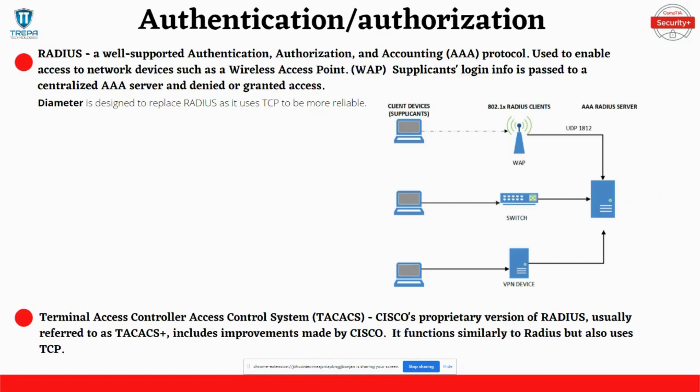RADIUS is an authentication, authorization, and accounting protocol used for NAC, Network Access Control. RADIUS is an open standard protocol commonly used in wireless networks for authentication. RADIUS will not encrypt the entire payload; it will only encrypt the password in a RADIUS packet. Endpoints or user devices are supplicants that provide login info to a RADIUS server, which then passes that information to an AAA server to authenticate and authorize the client devices.